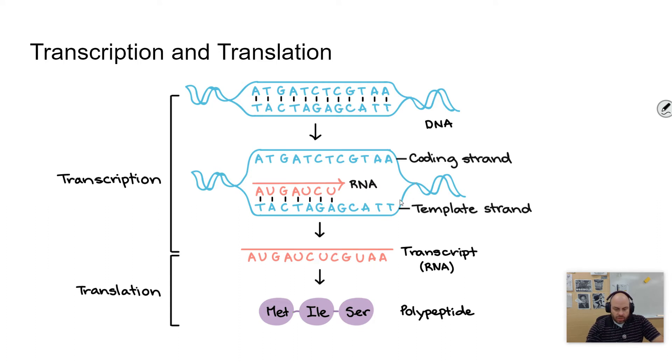The strand that is used is called the template strand. It can be called other things. Sometimes you'll see it called the non-coding strand, the antisense strand, the minus strand. And template strand is the best thing because it serves as the template for the RNA that's being made. Sometimes you'll see this other strand called the coding strand.